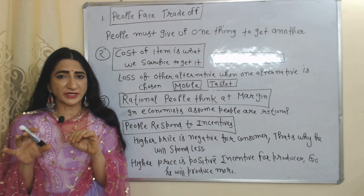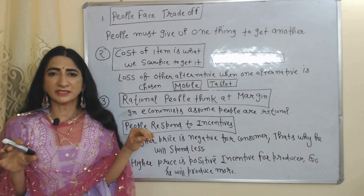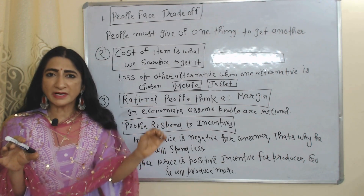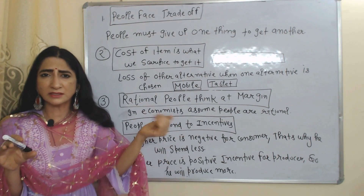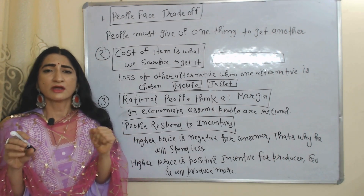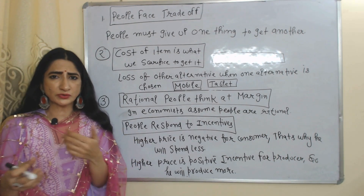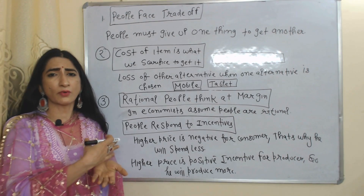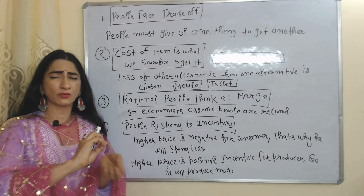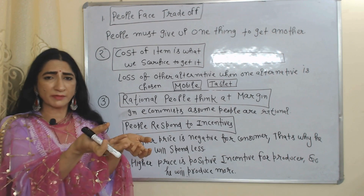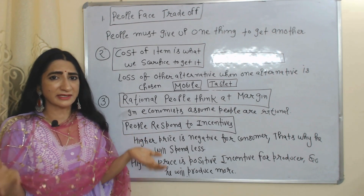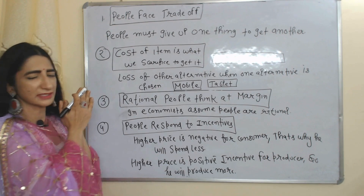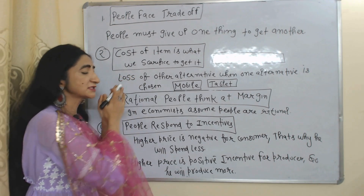The first principle is people face trade-offs. This means people must give up one thing in order to get another thing. For example, if a student wants to get higher marks in an exam, then they have to limit their time on watching Instagram reels, chatting on WhatsApp, or throwing parties — otherwise you cannot get the highest marks in the exam.